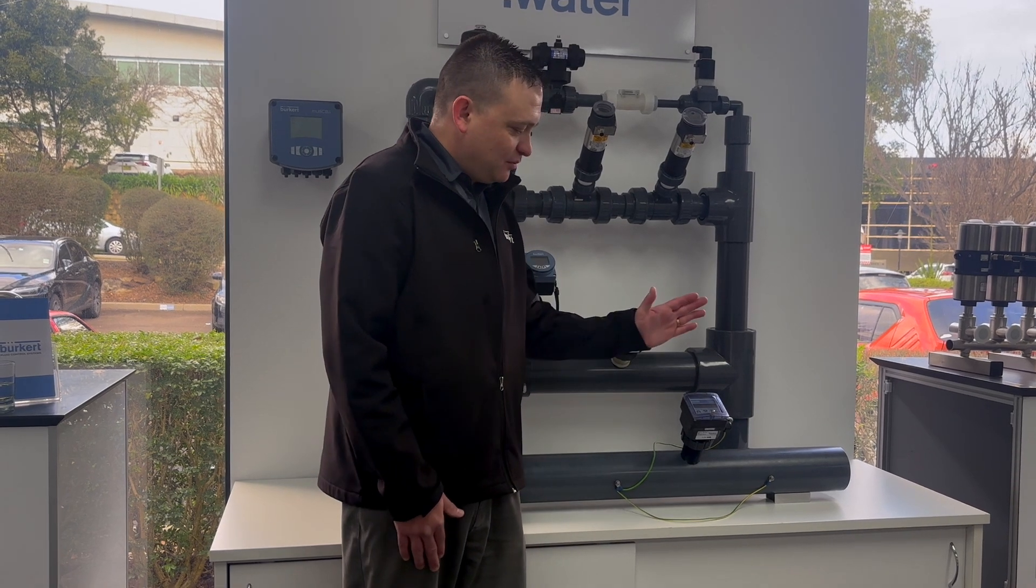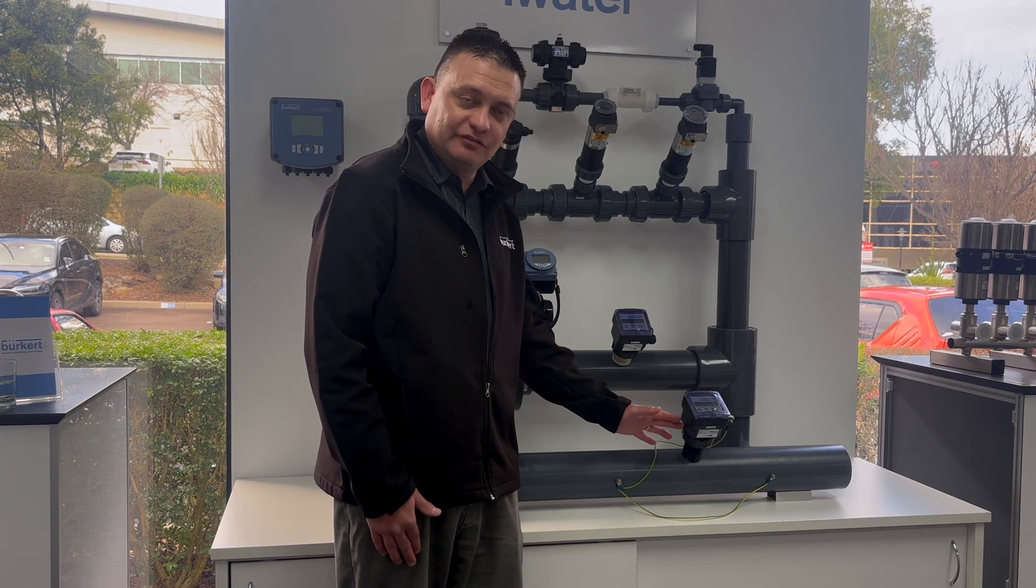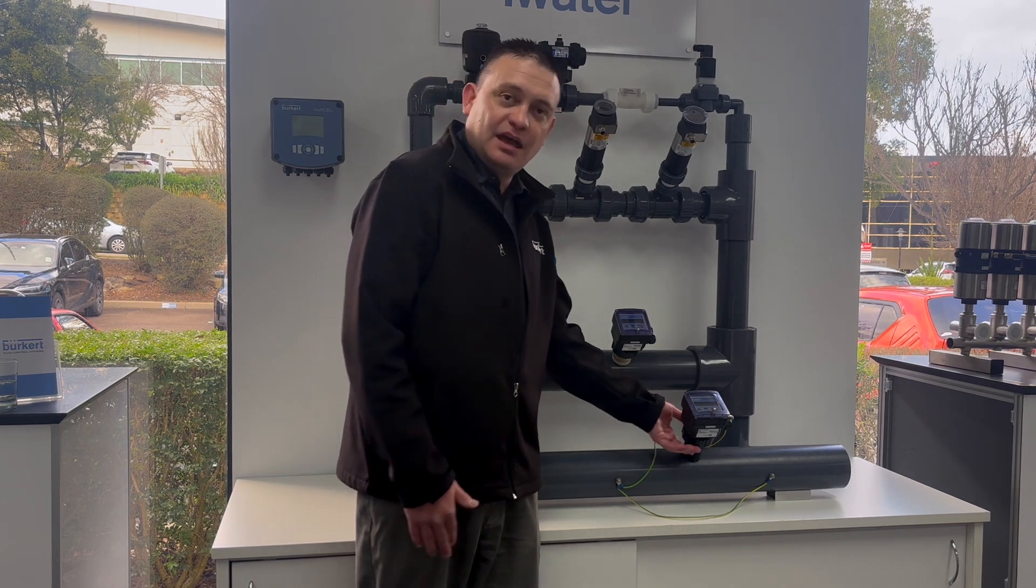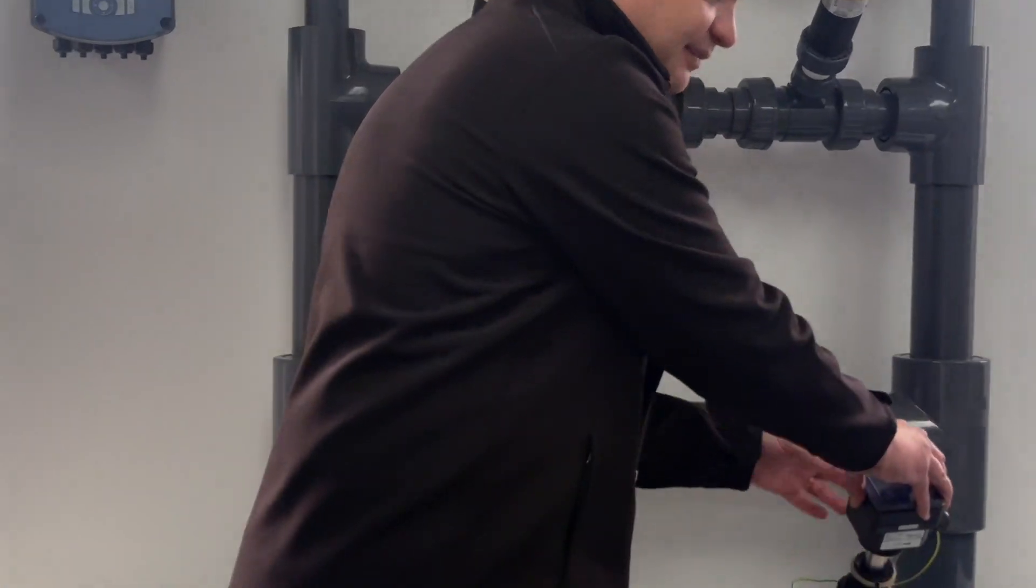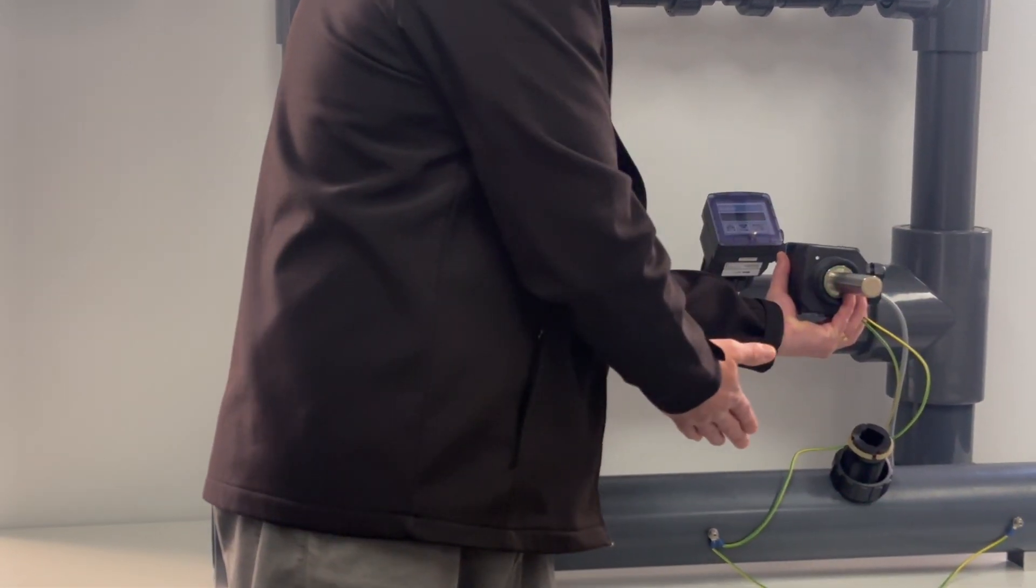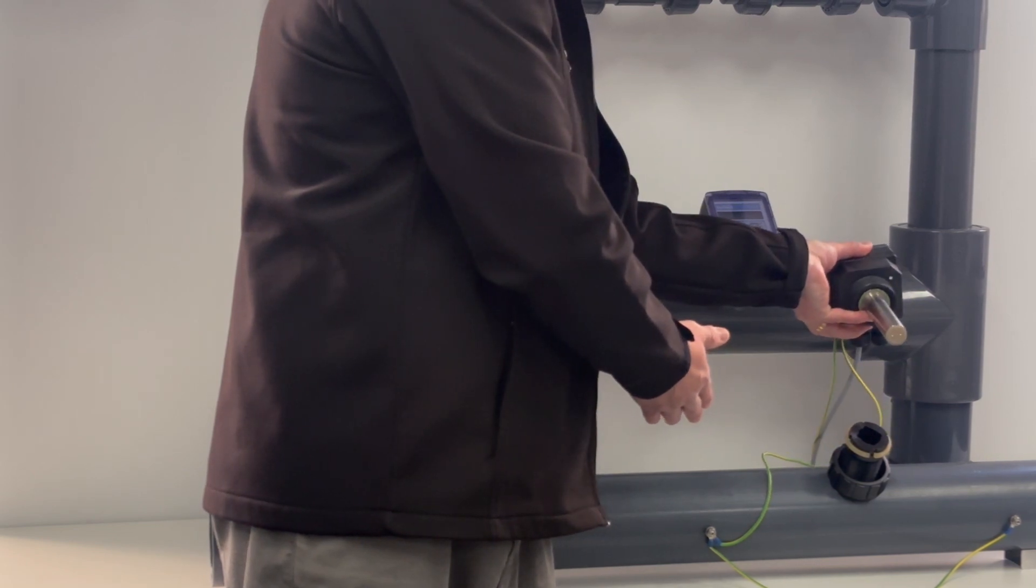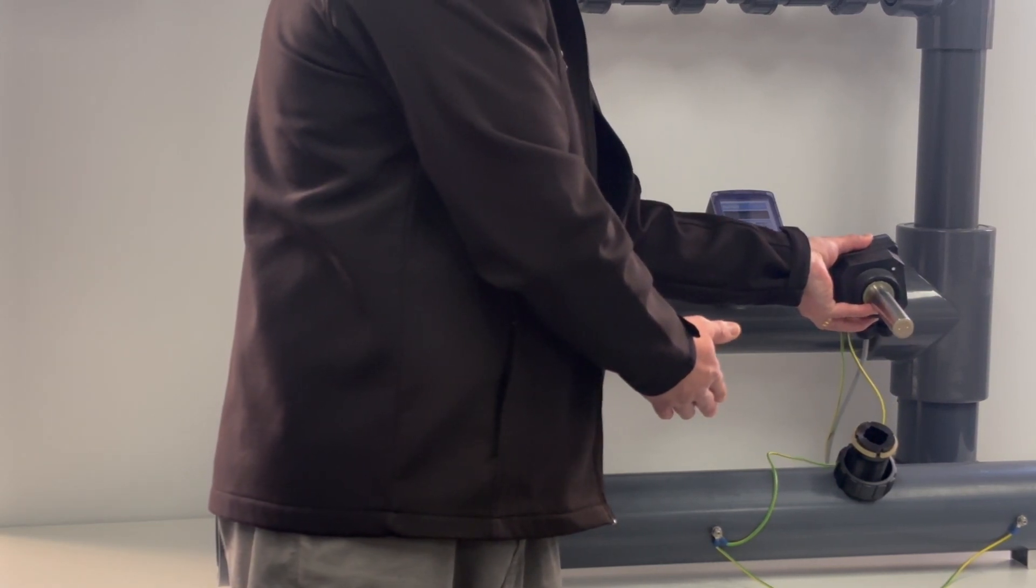Step three, we want to ensure the flow meter is installed correctly into the pipework. We want a nice 45 degree angle on the unit to reduce the effects of bubbles in the water, and we want to ensure our sensor tips are perpendicular to the pipework and not parallel. If they are parallel, we're not going to read any flow whatsoever and you'll have nothing but problems.